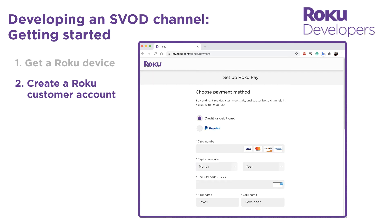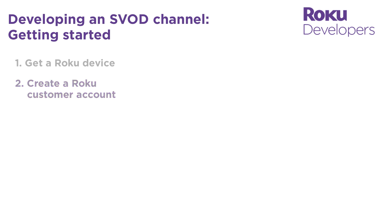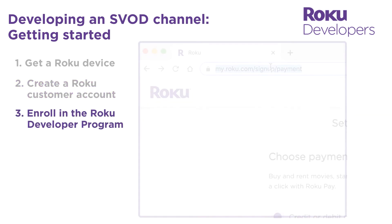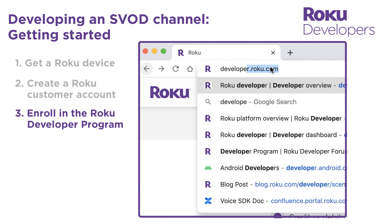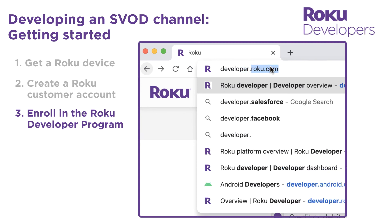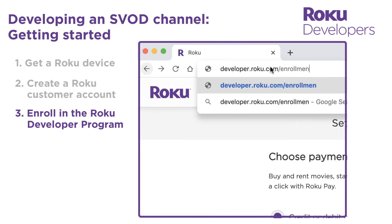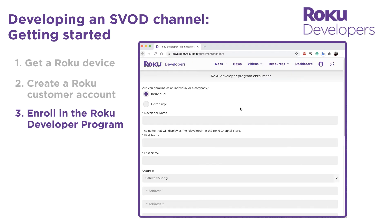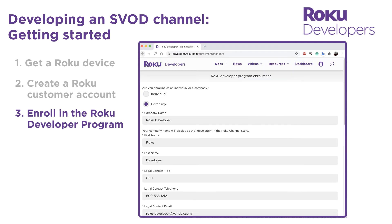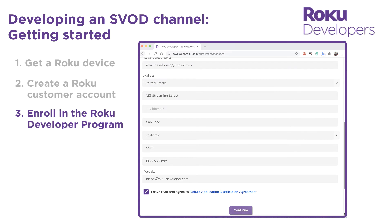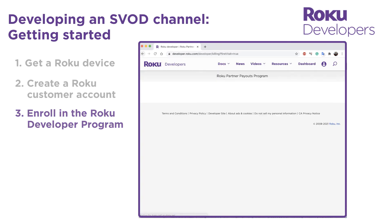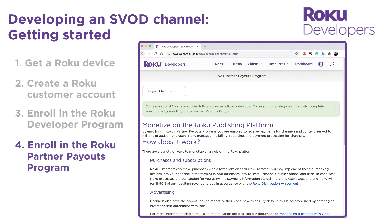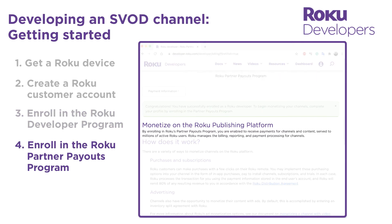Once your customer account is created, you can enroll in the Roku Developer Program at developer.roku.com/enrollment/standard. Enrollment is free and easy — you just need to provide your contact information and agree to the Roku Distribution Agreement.